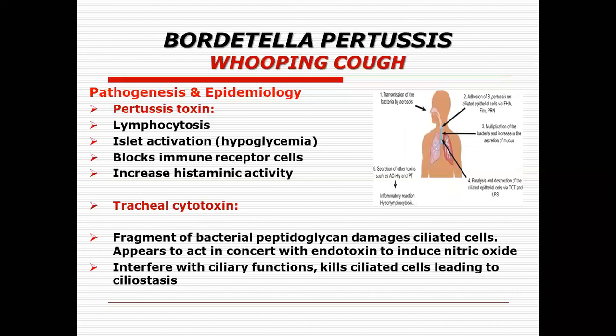The tracheal cytotoxin is a fragment of the bacterial peptidoglycan that damages ciliated cells. The tracheal cytotoxin is a fragment of the peptidoglycan layer. It appears that mostly the endotoxin induces nitric oxide, and this nitric oxide interferes with ciliary functions, damages the cilia, and leads to ciliostasis.